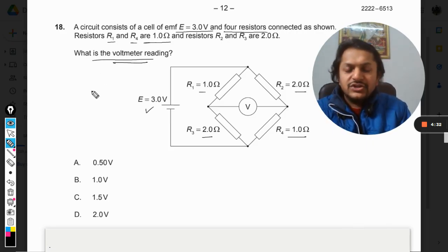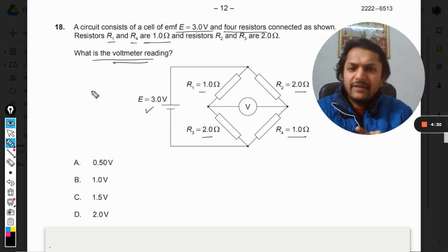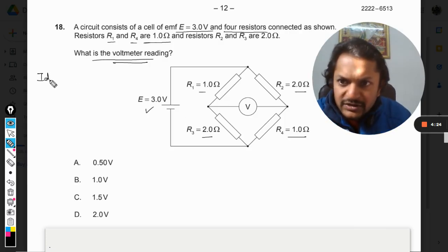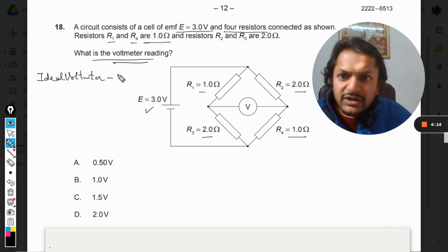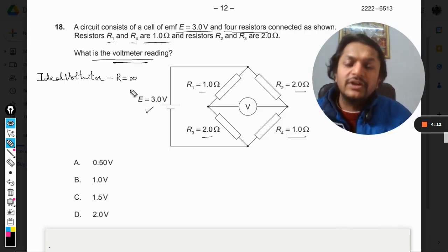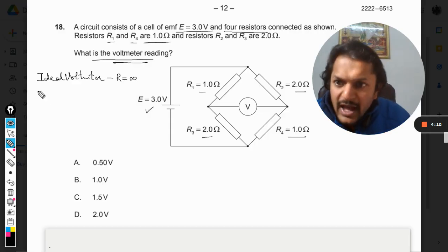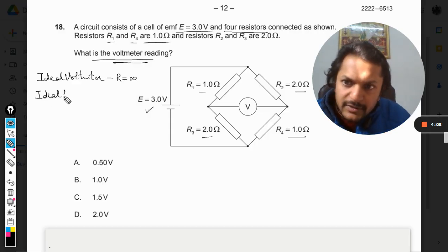Now this question has a very big concept here. The voltmeter, these are ideal voltmeters. What do you mean by ideal voltmeter? Voltmeters generally have a very high resistance, so ideal voltmeters will have a resistance equal to infinite because it is ideal. And what about the ammeter and the ideal ammeter? They have very low resistance.